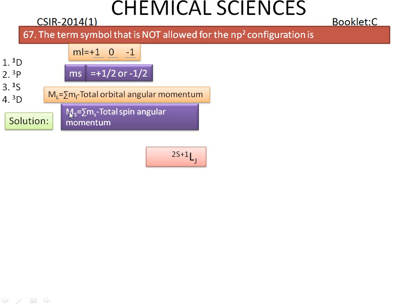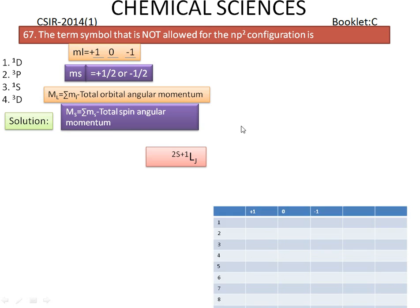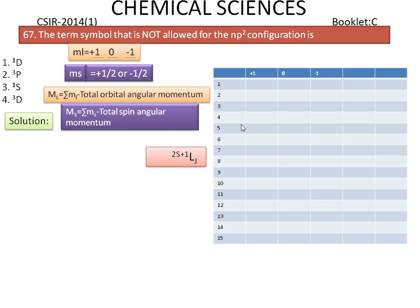The interactions produce atomic states called microstates, described by new quantum numbers ML and MS. We need to determine how many possible combinations of ml and ms exist for the P2 configuration. Once these combinations are known, we can determine ML and MS. The next step is to tabulate the possible microstates.